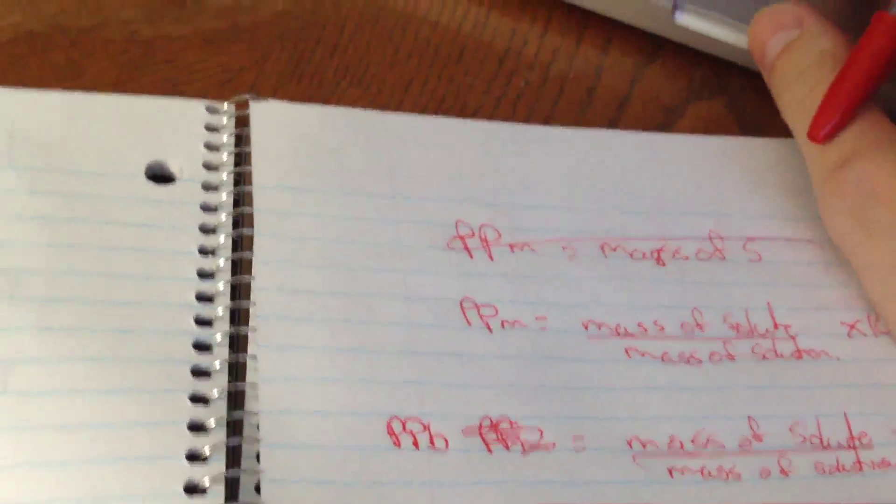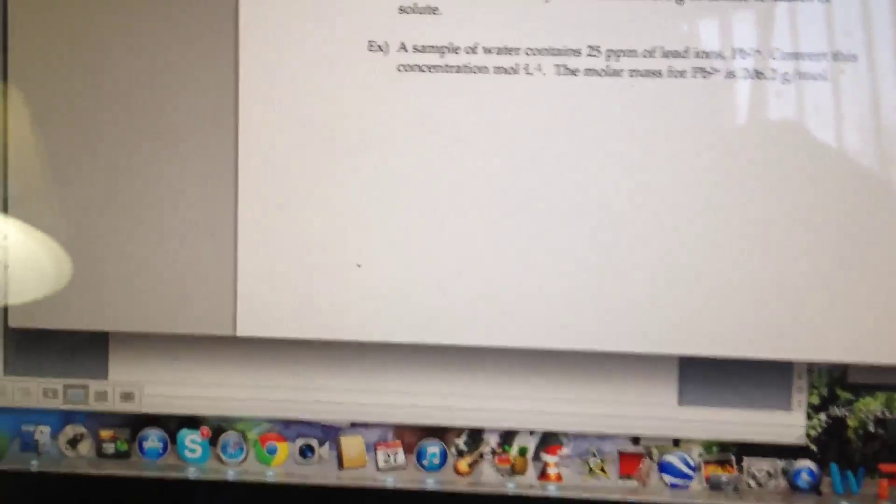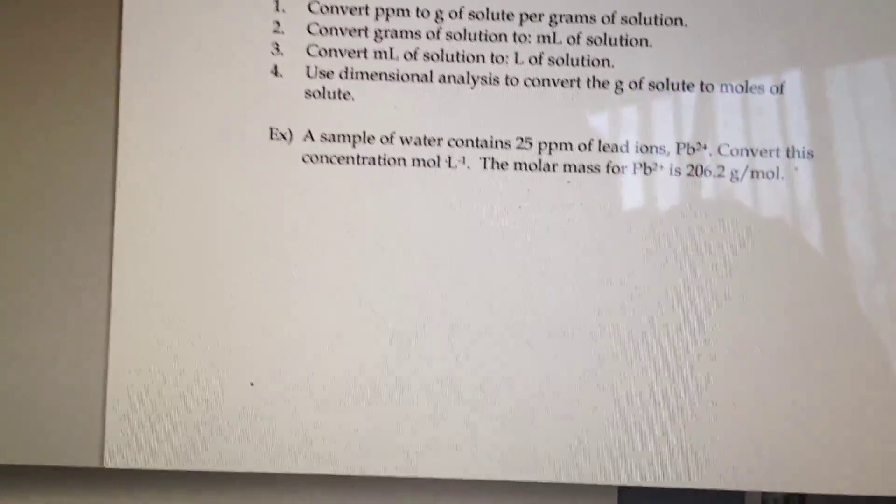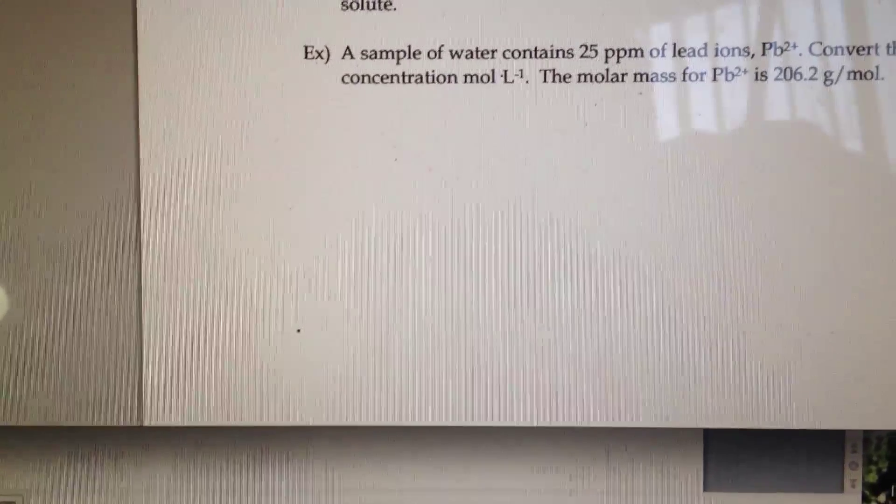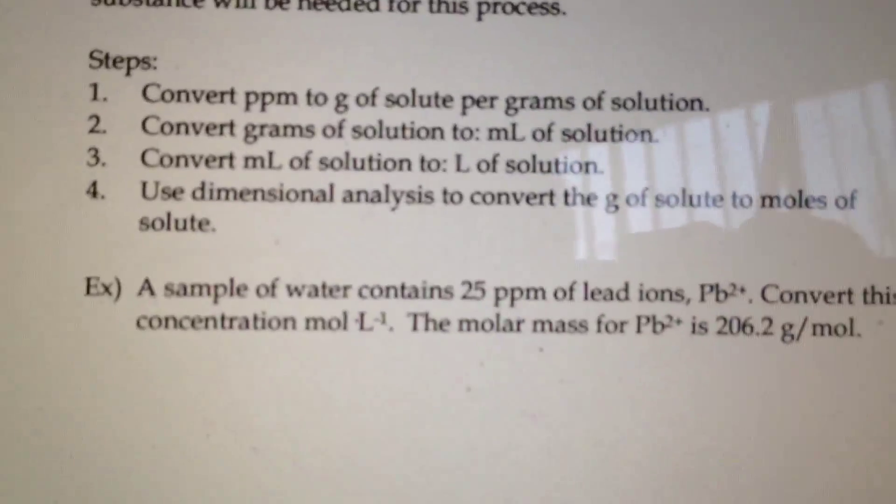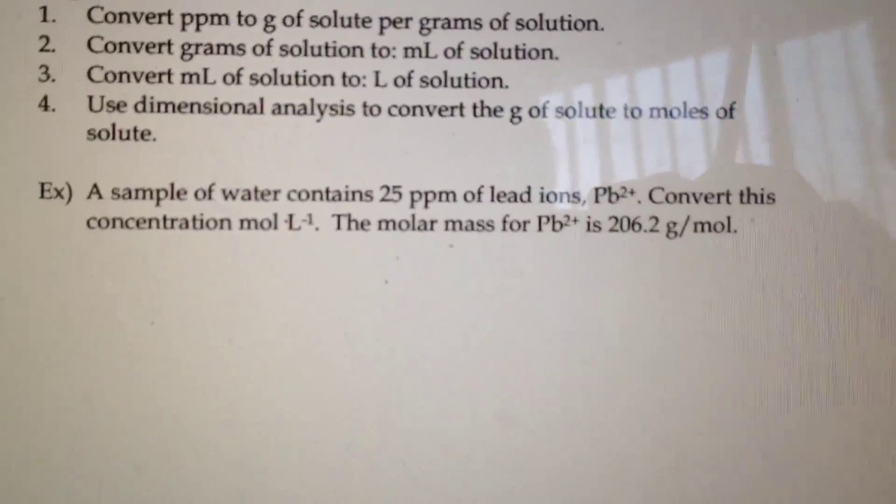Alright, now on the last example, a sample of water contains 25 parts per million of lead ions. Convert this into concentration of moles times liters to the negative 1, so that's just molarity. Molar mass of lead 2+ is 206.2. So all we're gonna do,